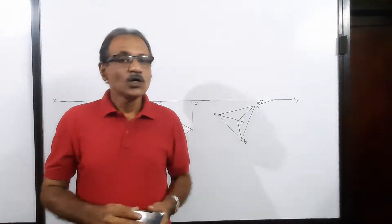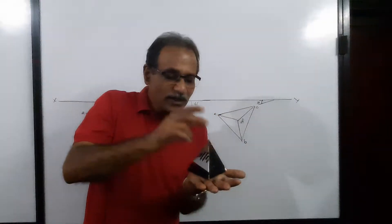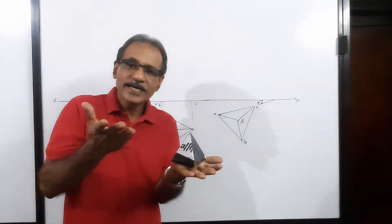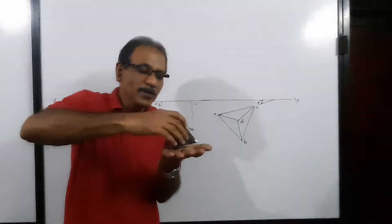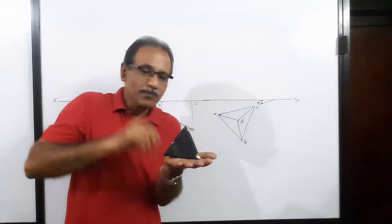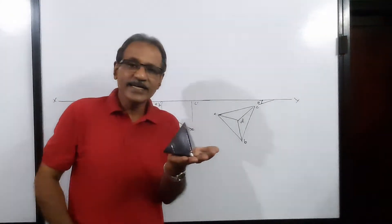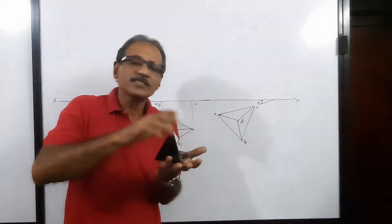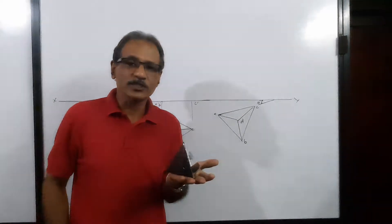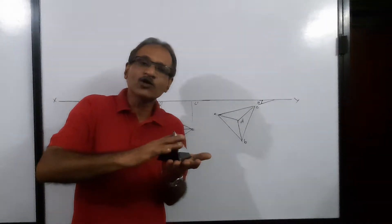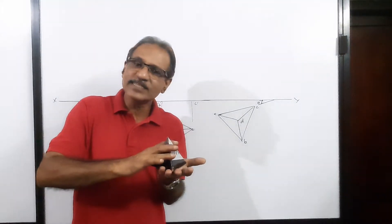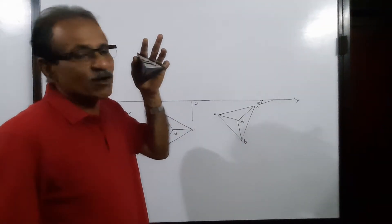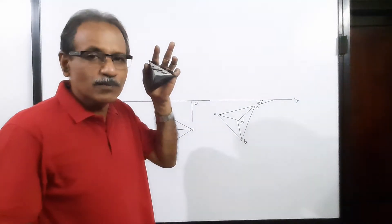When the tetrahedron stands on the ground on a triangular face, it is in a simple position. One side parallel to VP, one side perpendicular to VP, one side making 30 degrees to VP — whatever orientation, these are all simple positions. Similarly, whenever it is lying on VP on a triangular face, it is also a simple position.